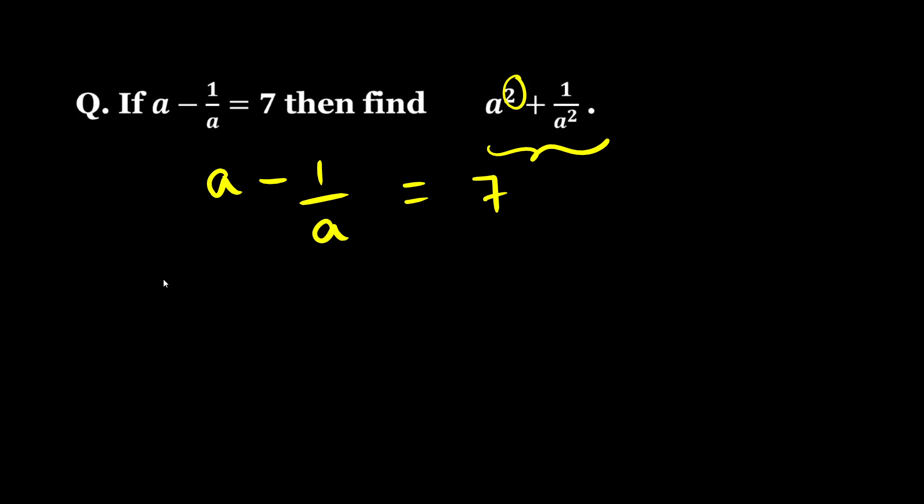So a minus 1 by a whole square equals 7 squared. Now here I can use the formula, right? Which formula? I can use the formula of a minus b whole square.